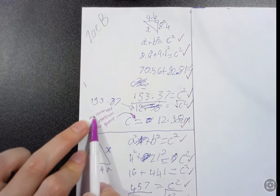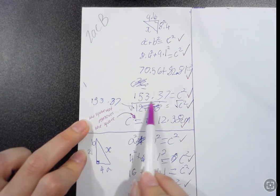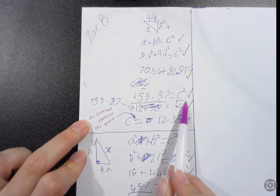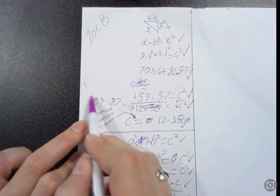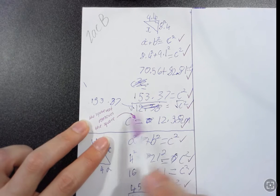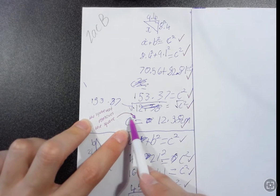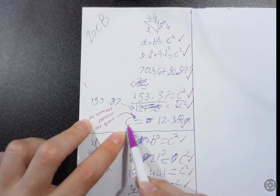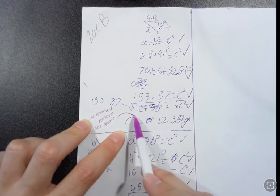I just want to make a point that when you do this square root at the end, so you've done square root of c squared and the square root of 153.37, you've already found c squared, you're no longer finding that. What you're finding is c, you're not finding c squared, you've already got that, you're finding plain old c.